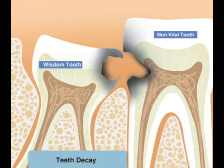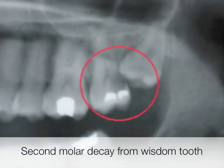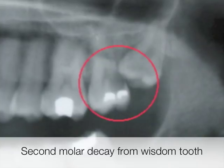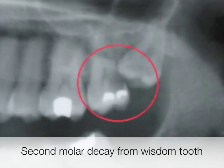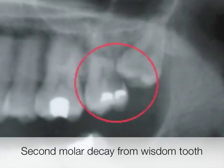Decay or caries can also occur on wisdom teeth or on the root surface of the second molars. This is sometimes near impossible to treat. If decay happens on the second molars, it often has to be extracted too, and that is a big loss.